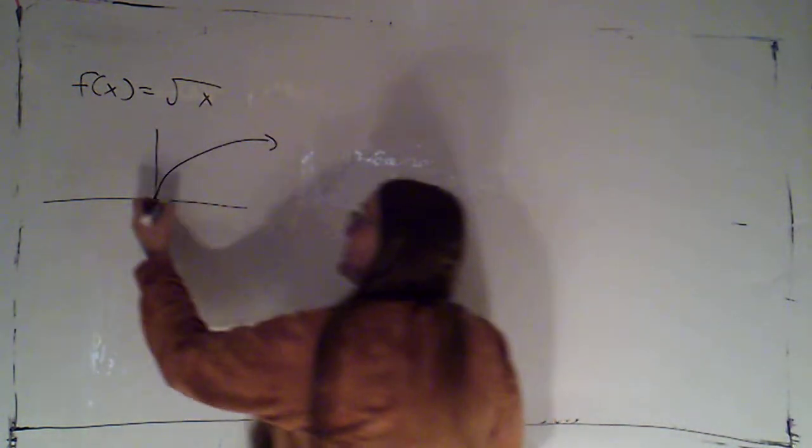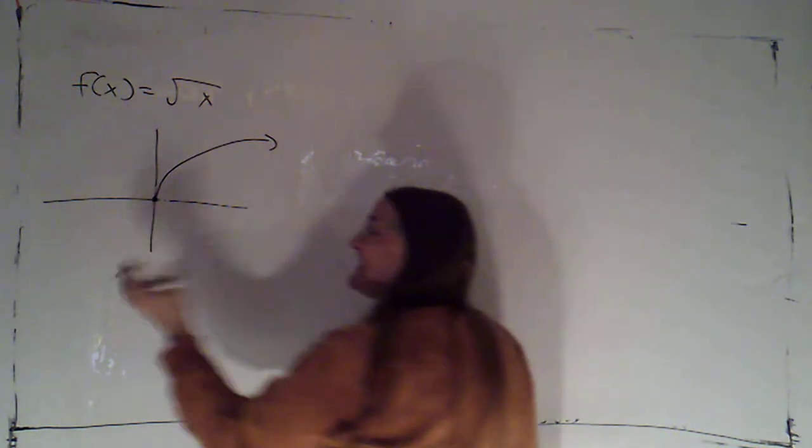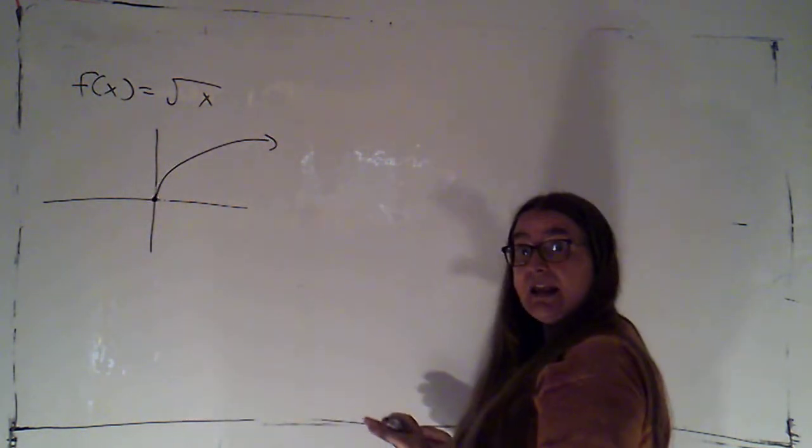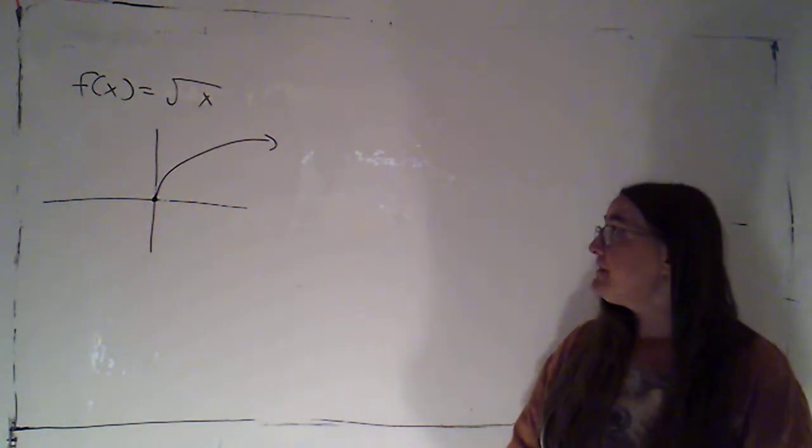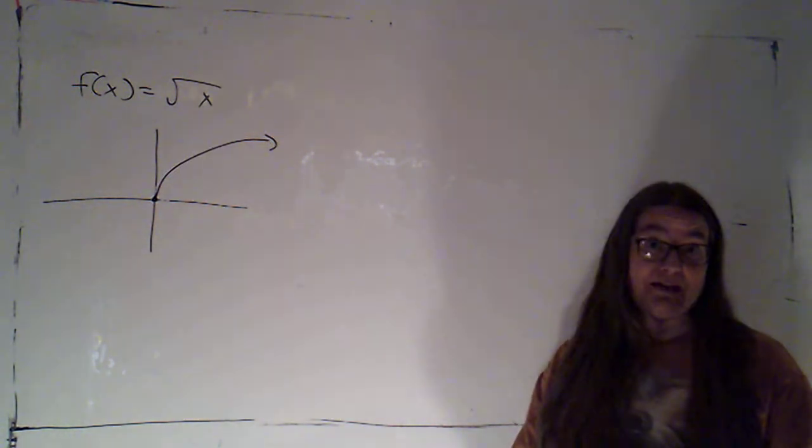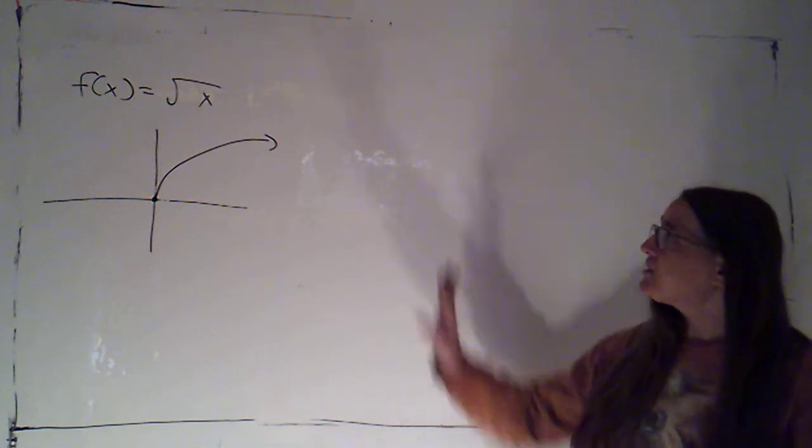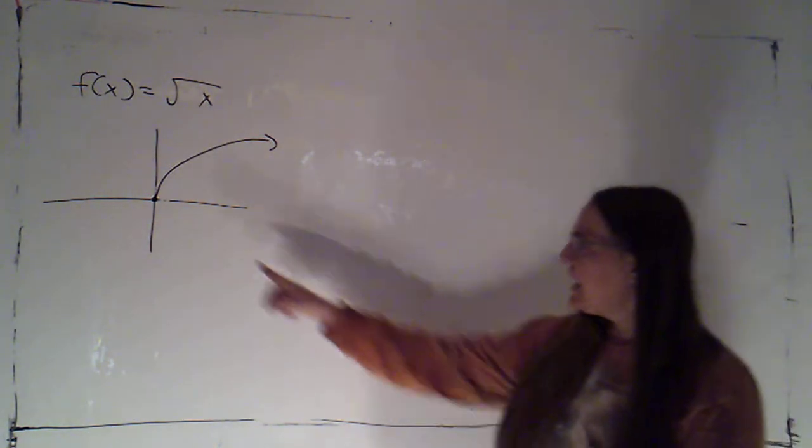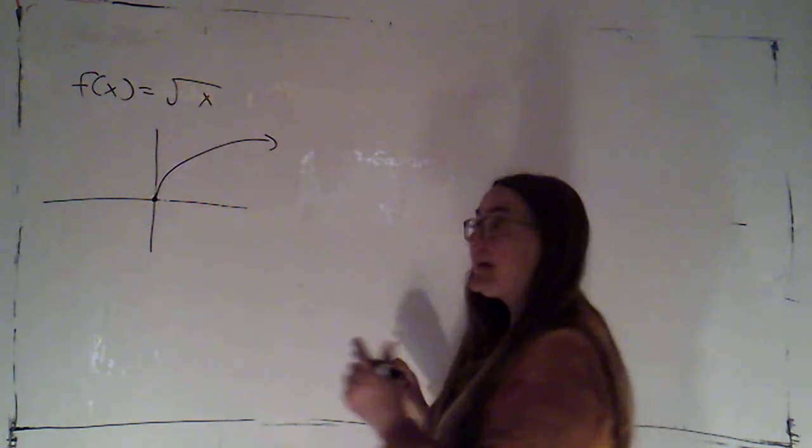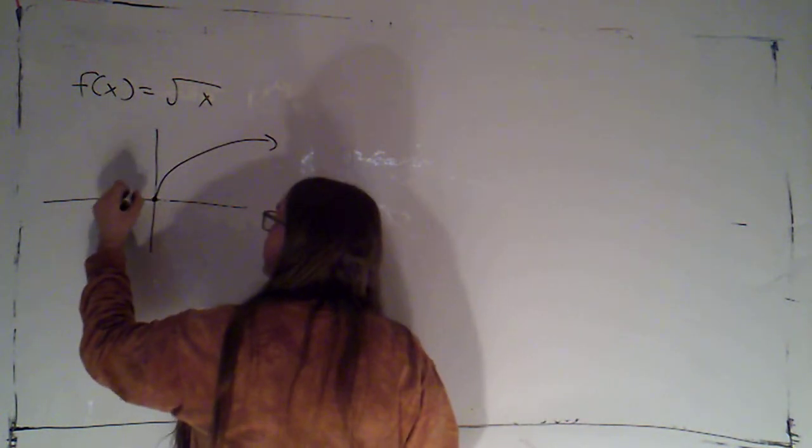And because I'm looking for the derivative at this point, and it's the end point of the domain, I mentioned we have to adjust the definition of the derivative to use a one-sided limit, if that's the case. So, I'm not going to just find the derivative function and then try to plug in zero. I'm going to try to find the derivative at this point. Zero, zero.